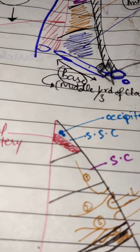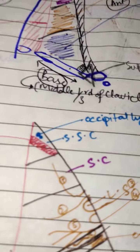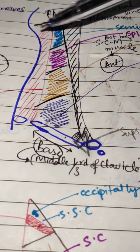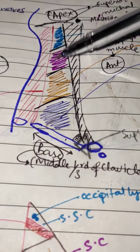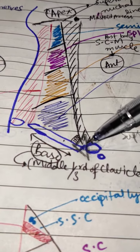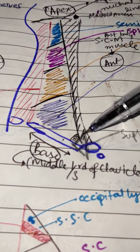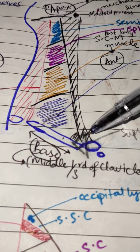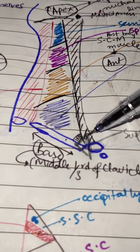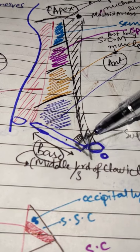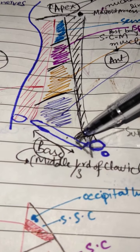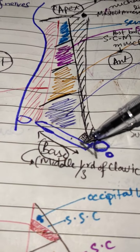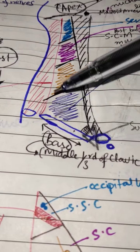The posterior triangle of the neck is divided into two triangles. The upper part is called the occipital triangle, and the lower part is called the subclavian triangle, also known as the omoclavicular triangle or supraclavicular triangle.